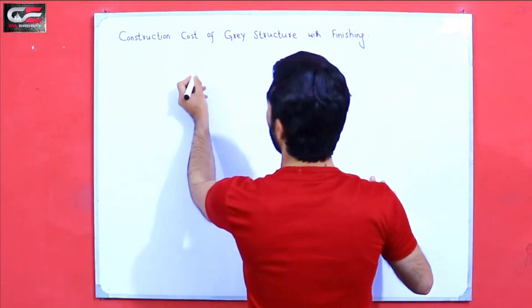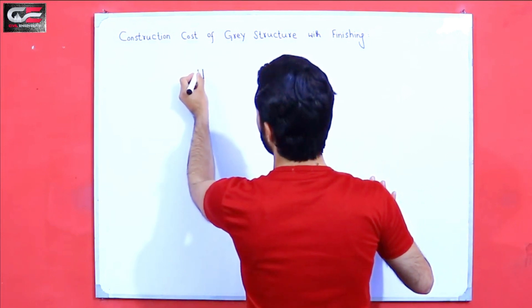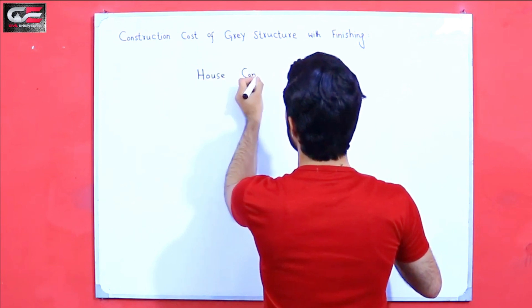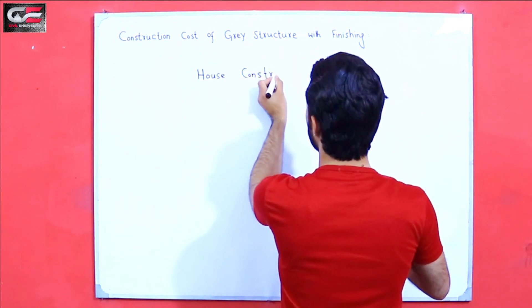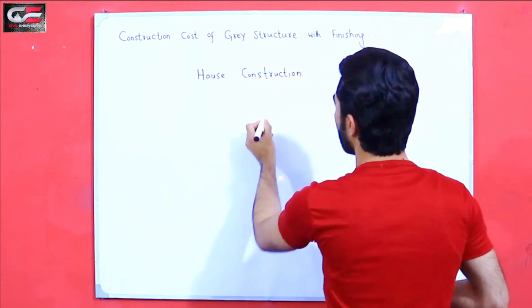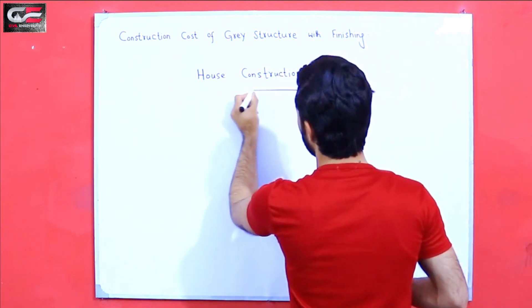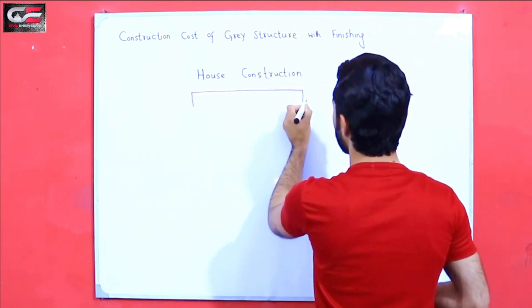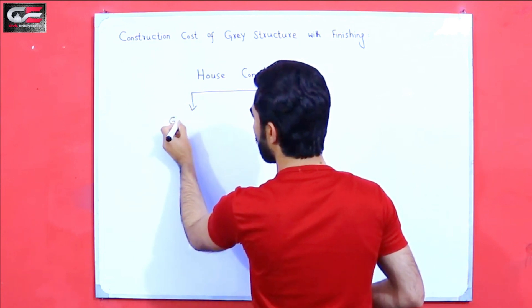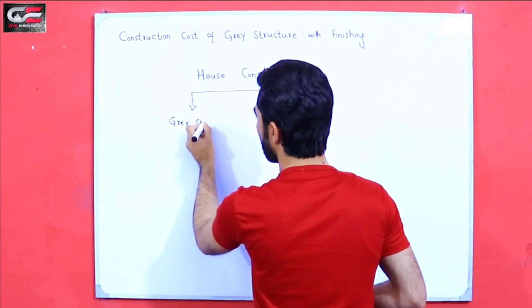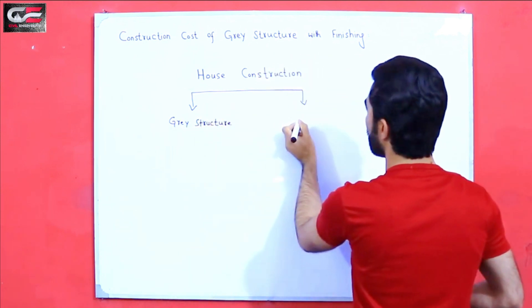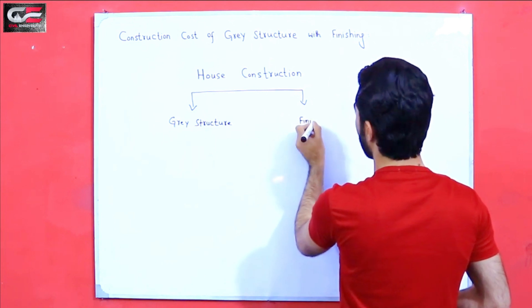As you know guys, house construction has two parts. One is gray structure and the second one is finishing structure.